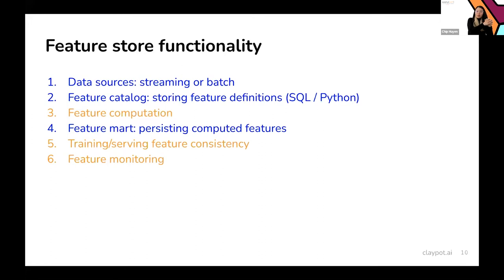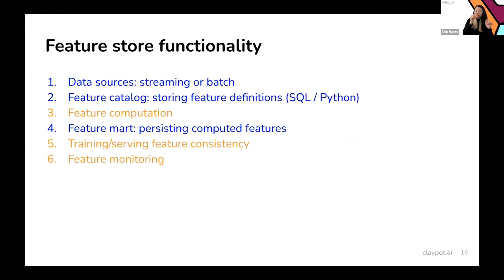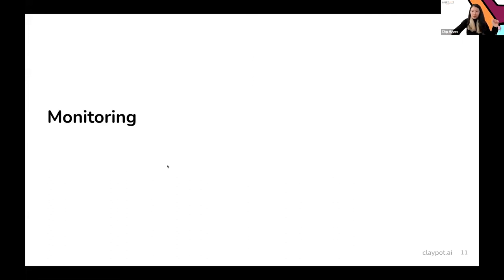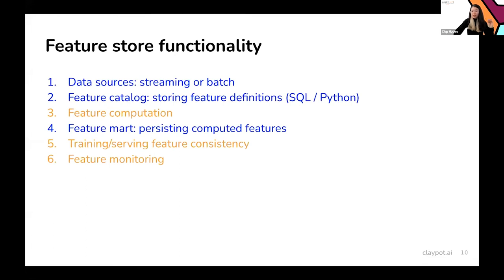The things in blue in the diagram are what I believe feature stores today are doing well: connecting to different data sources, storing feature definitions, and persisting computed features. However, there's still a lot of room for improvement in areas like feature computations, training-serving feature consistency, and feature monitoring. Modern feature stores like Tecton and Wind are actively working on this, and I'm very excited to see where feature stores are going.